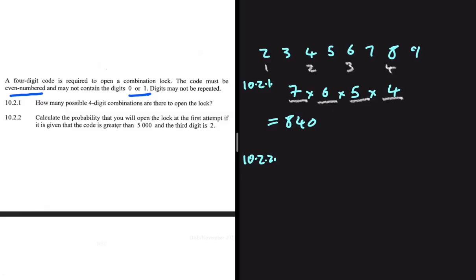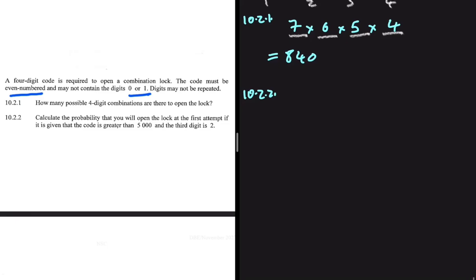If the code is greater than 5000, then the first digit must be five, six, seven, eight, or nine — so we need one of those five numbers to occupy the first position. The other condition is that the third digit must be two, meaning only one digit can occupy that spot.